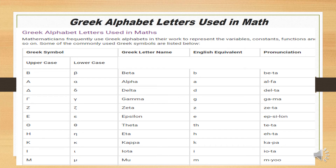Iota — English equivalent letter I, pronunciation: iota. Mu — Greek letter mu, English equivalent M, pronunciation: mu. Remember, Greek alphabet letters are used in math to represent different variables, constants, and functions.